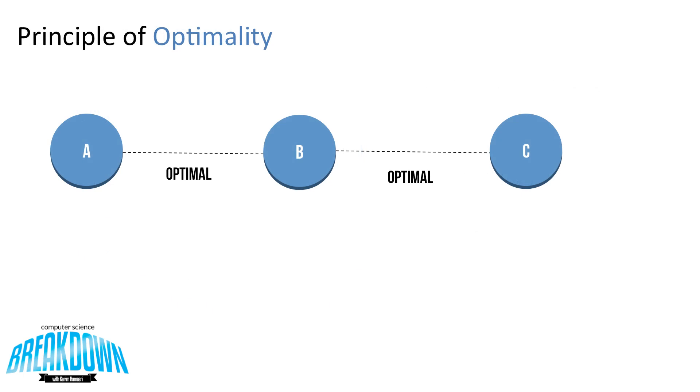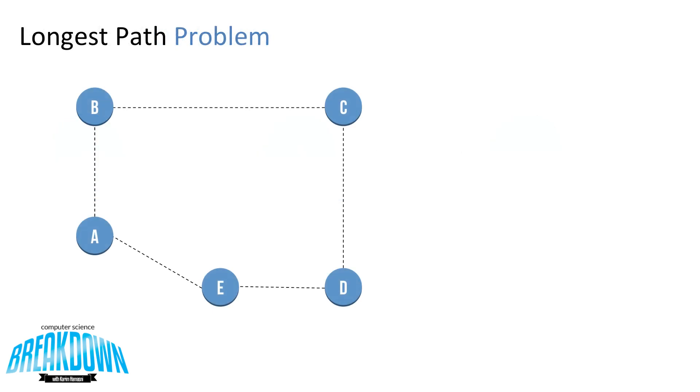So now let's just quickly review what optimal substructure is. So if we had this very simple graph and we want to get from A to C, then if it's optimal from A to B and optimal from B to C, then we can assume it's optimal overall.